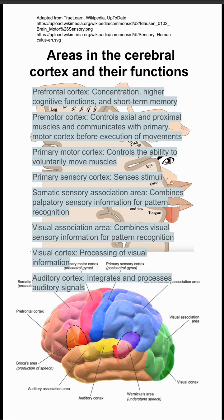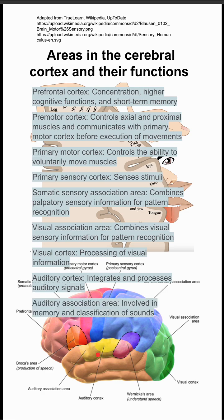The auditory cortex, which is kind of in the middle, integrates and processes auditory signals. The auditory association area, which is right next to it, is involved in memory and classification of sounds.